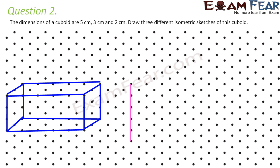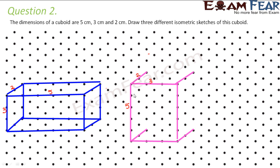Now if we turn the cuboid, we can have the 5 cm dimension as the vertical side. So this time the vertical length is 5 cm, the horizontal width is 3 cm, and the depth is 2 cm. When you draw the back face rectangle, you get the same cuboid — just viewed vertically rather than horizontally, as in the first scenario.